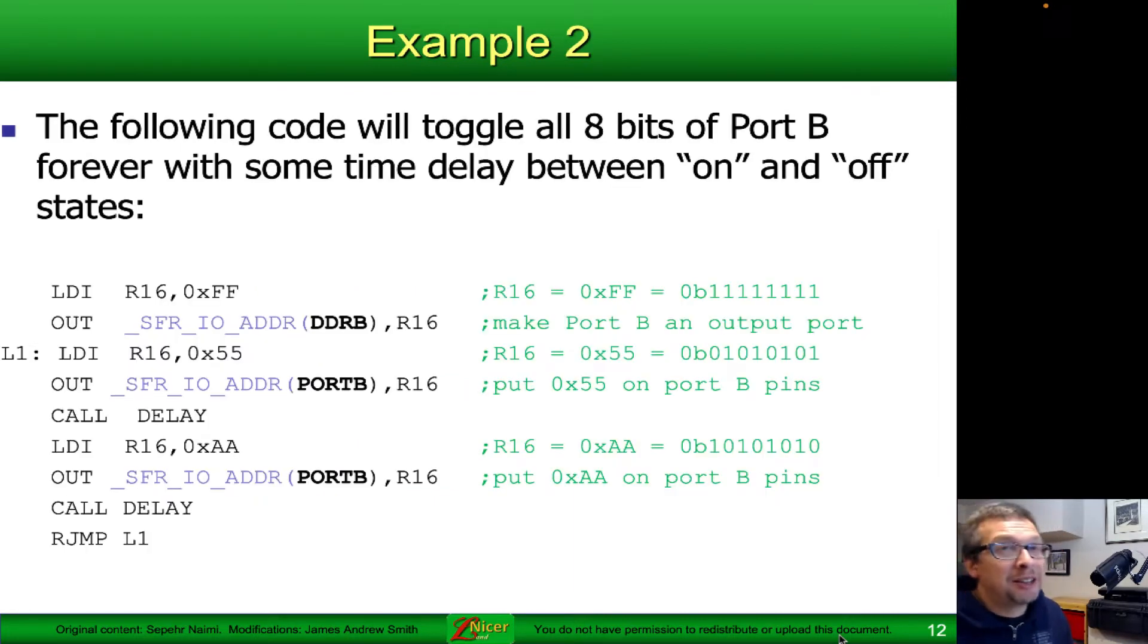Let's take a look at another example. The following code will toggle all 8 bits of port B forever with some time delay between the on and off states. What's important to point out is that on the call lines, the delay function we're calling isn't actually defined here. We're assuming it's defined elsewhere and actually causes the delay that we want in a reliable way.